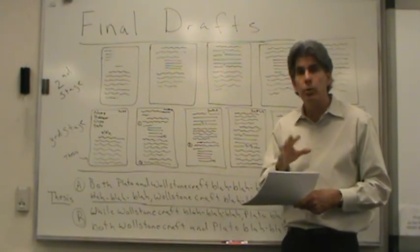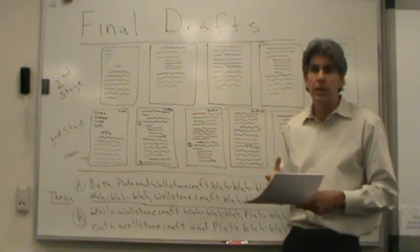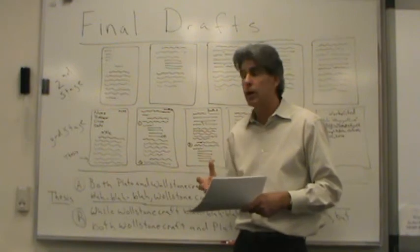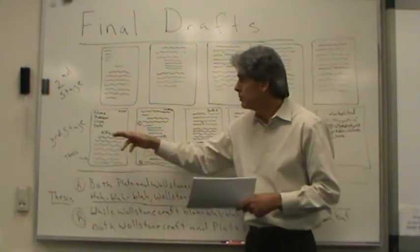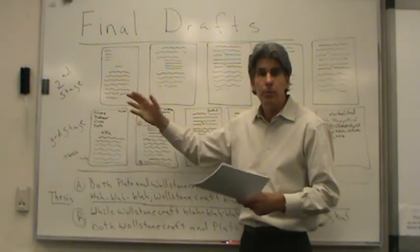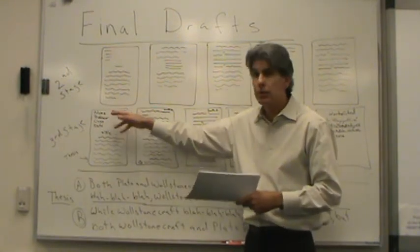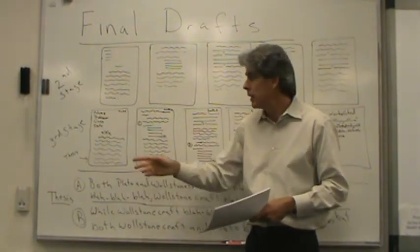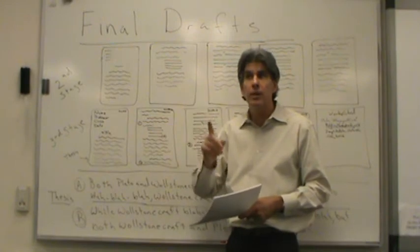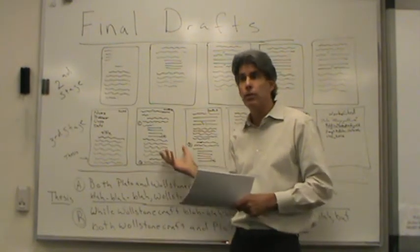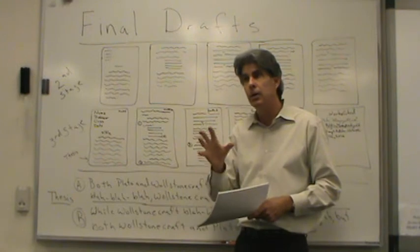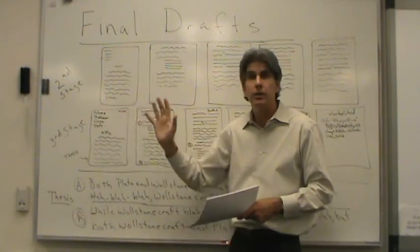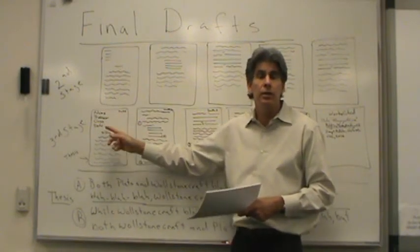I'm going to go through MLA somewhat quickly because you should have it down from English 101, which is a prerequisite for the class, but I'll go through the basics so we don't run into major trouble. First, make sure you have your name first — put Susie Smith. Next is my name, Joseph Pendleton. Then the class, English 104. And then last, the date you sent it in. So if you choose to rewrite this one later in the semester, you're going to use a later date — same name, same professor, same class, but a later date.